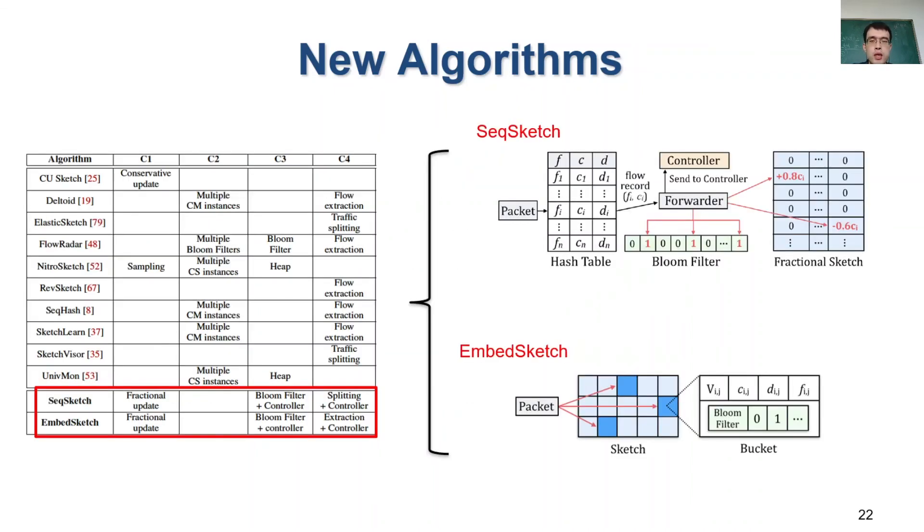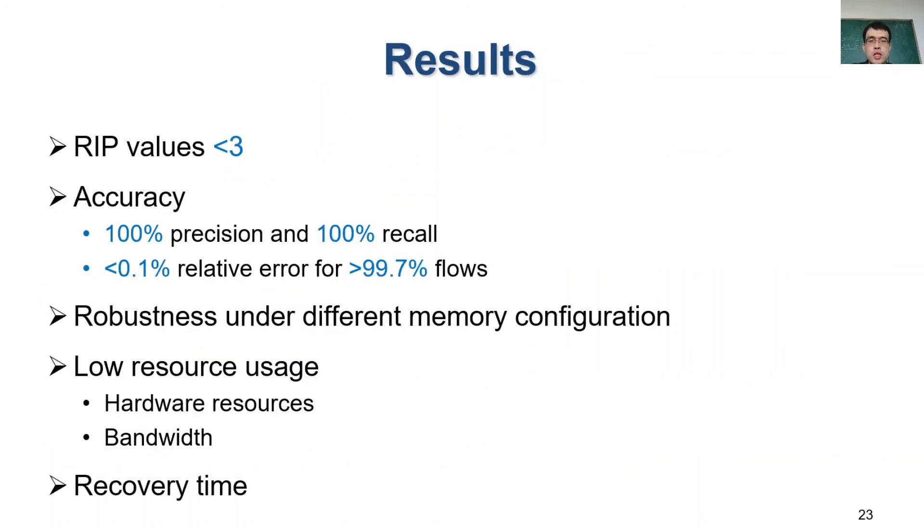In this paper, we propose two new algorithms, Seek Sketch and Embed Sketch. They identify flow keys with bloom filter and store the keys in the control plane. And they maintain candidate large flows to split traffic into large flows and small flows. They also produce fractional updates to the sketch structure. Our results show that if we construct sensing matrix for the two new algorithms, the matrices are highly orthonormal.